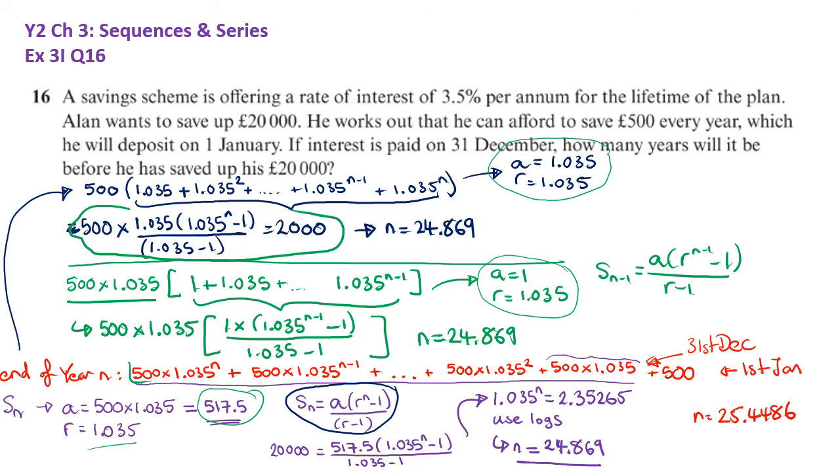With both of these answers, I would take your whole numbers, n is 24 and n is 25, and plug them into your formula, whichever formula you've used. Plug it into your formula for your model. And you'll see that it's only when n is 25, after 25 years that he saved up 20,000 pounds. So always sense check at the end which value of n you're using.